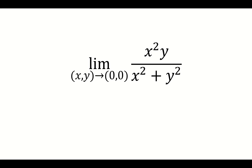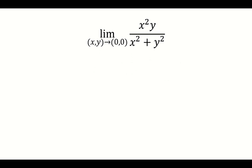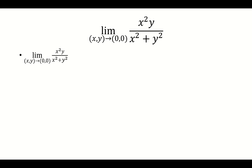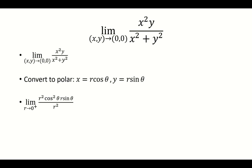We want to solve for the limit as x and y approaches (0, 0) of x squared y over x squared plus y squared. We're going to solve this by using polar coordinates. So instead of x and y approaching (0, 0), we're going to have the limit as r approaches 0 from the right. Because r is a radius, and the radius can never be negative — it can only be greater than or equal to 0. That's why it's approaching 0 from the right.